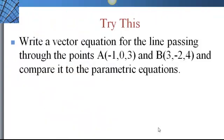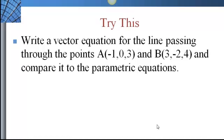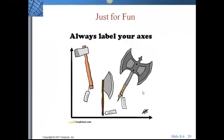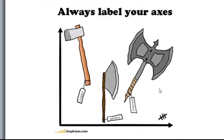Now try this one: write a vector equation for the line passing through points A(−1, 0, 3) and B(3, −2, 4), and compare it to the parametric equations. And always remember — label your axes.